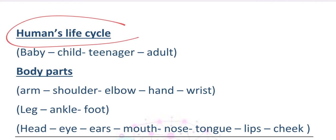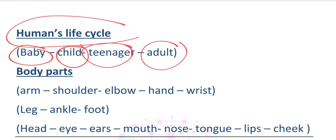Now let's talk about lesson number three: the human life cycle. In FS1 you were a baby. Now, in year one, you are a child. After that, when you grow to be 12 or 13, you will be a teenager. And then, when you grow more to be like your mother or your father, you will be an adult.